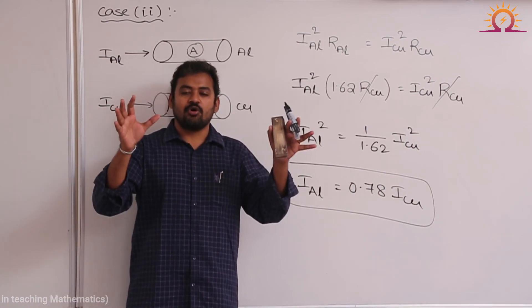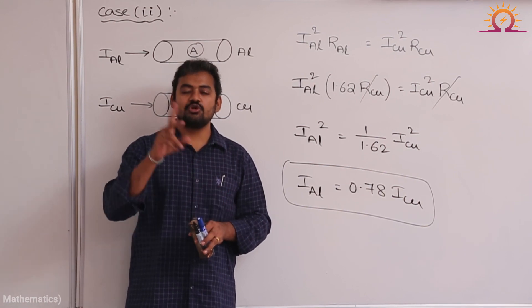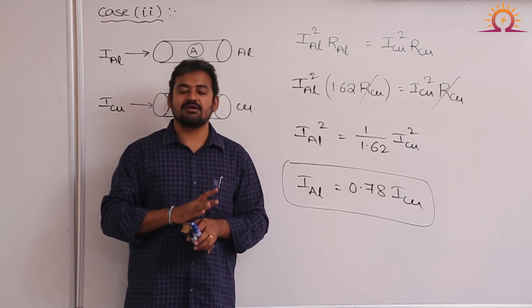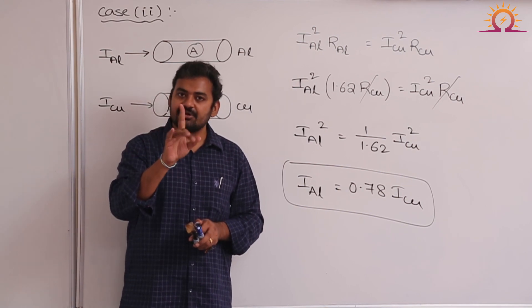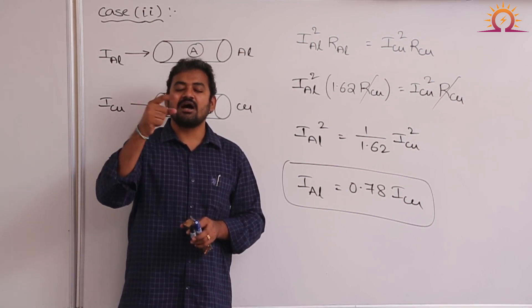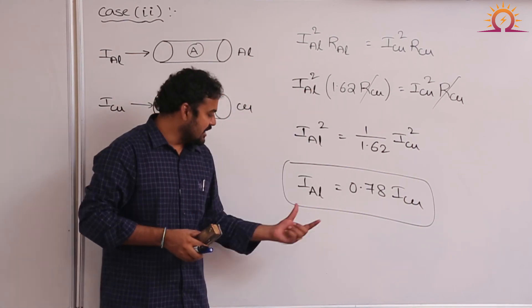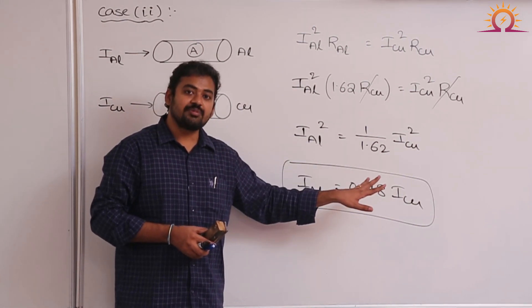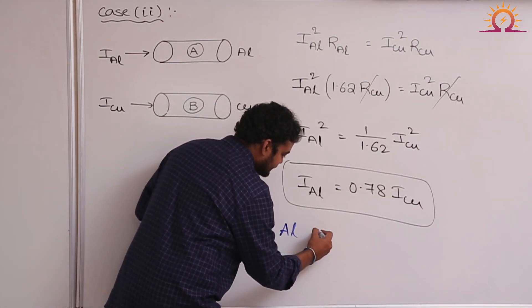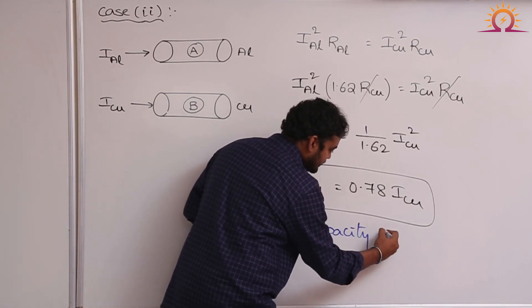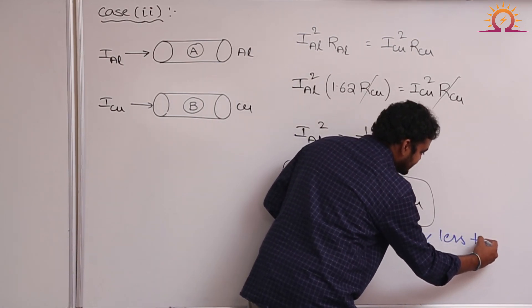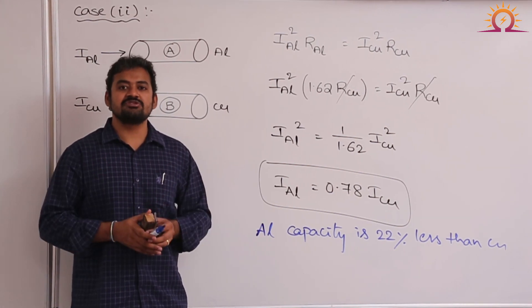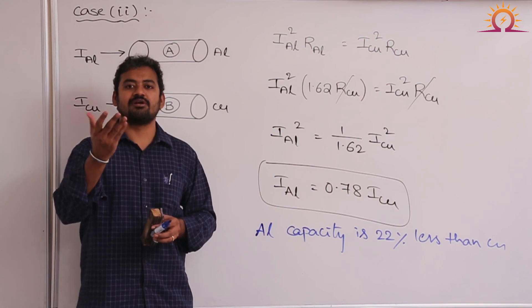This question appeared in one PSU examination: two machines A and B have the same size; Machine A is designed using aluminum conductor, Machine B using copper conductor — for the same temperature rise, Machine A capacity is how many percent less than Machine B? The answer is: aluminum conductor capacity is 78% of copper, meaning 22% less. Therefore, the machine using a copper conductor as the winding will offer more power capacity.